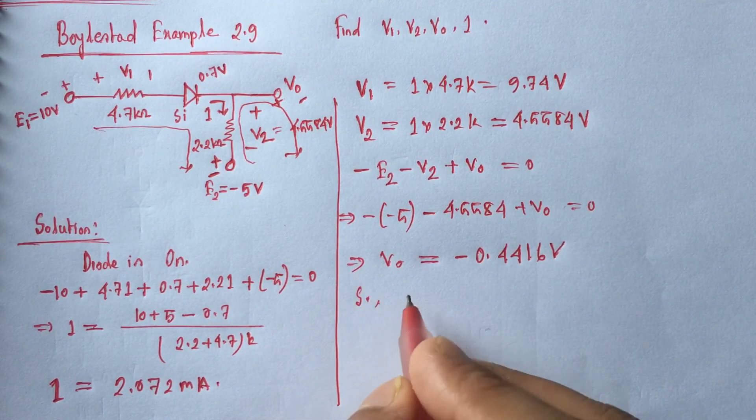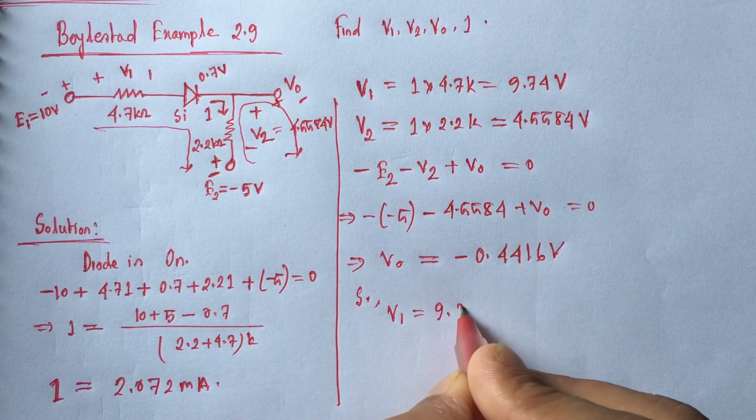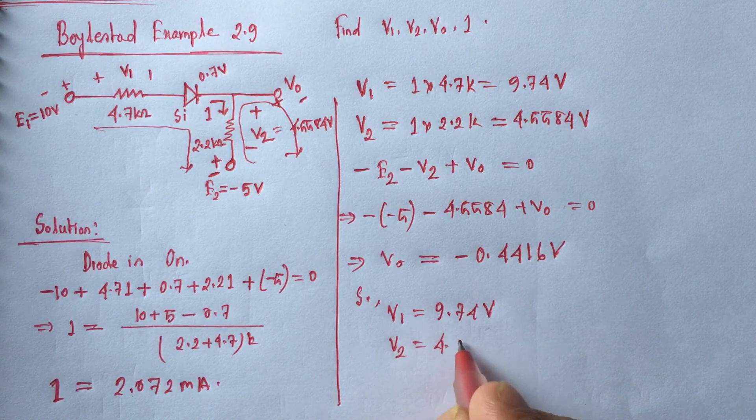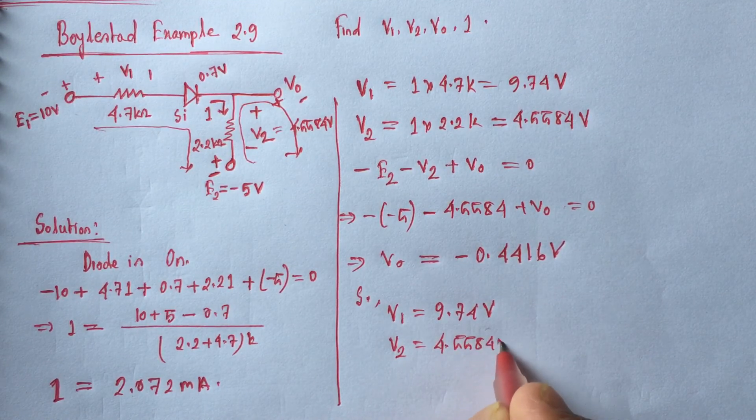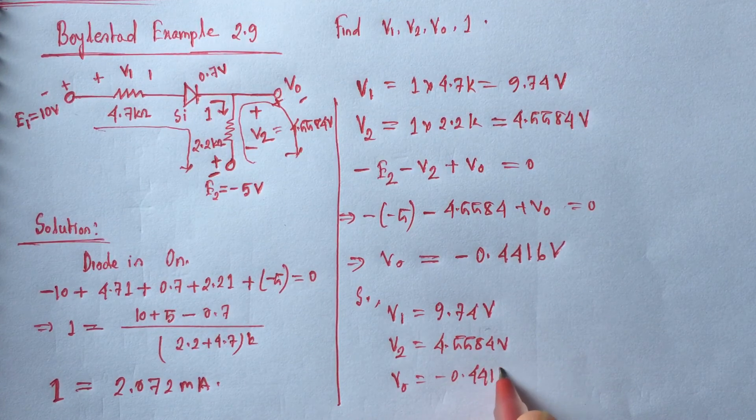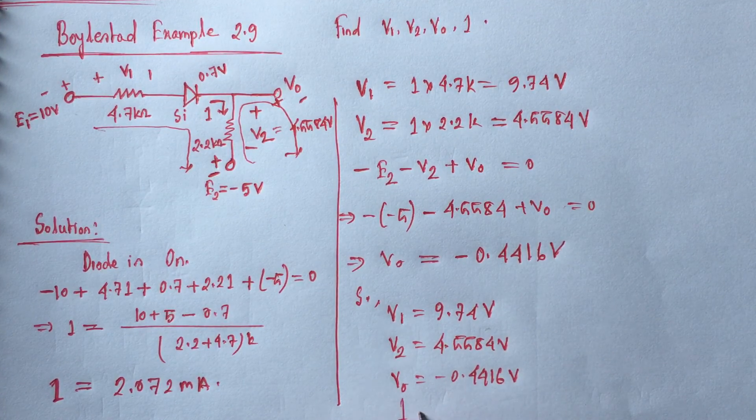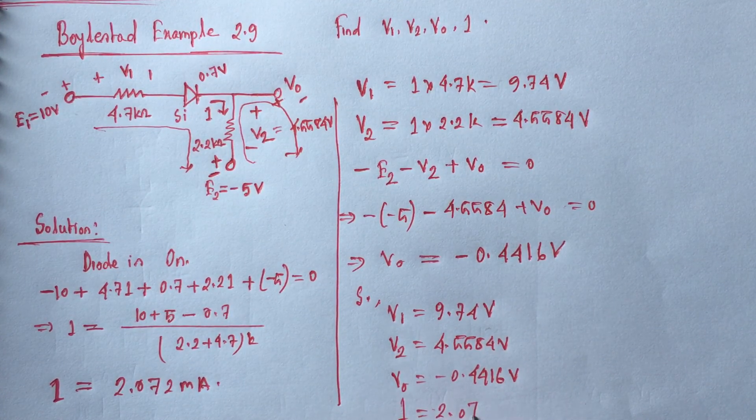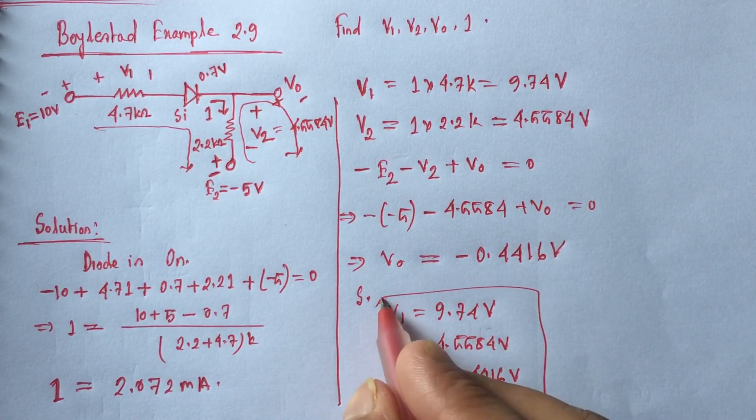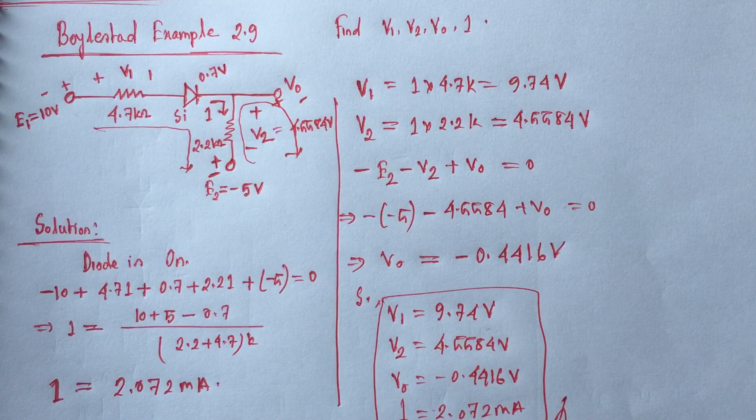So we have got V1 is equal 9.74 volt, V2 is equal 4.5584 volt, V0 is equal to minus 0.4416 volt and I is equal to 2.072 milliampere. These all are answer. Thank you.